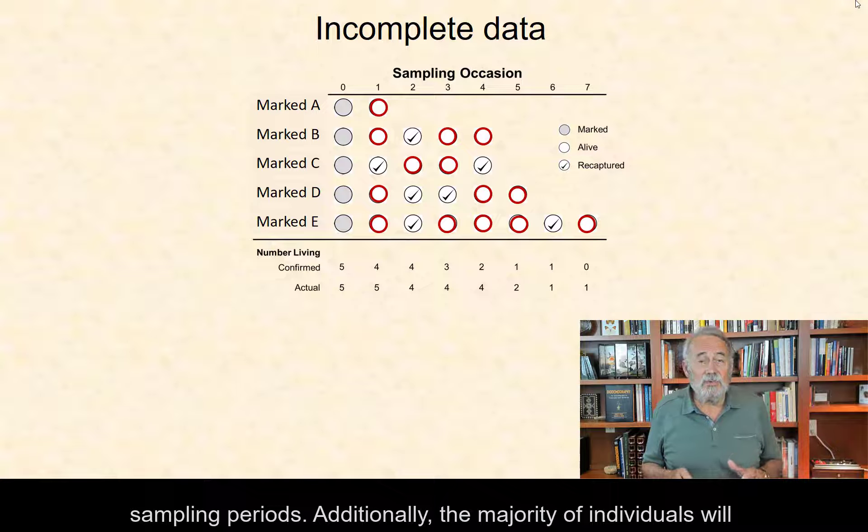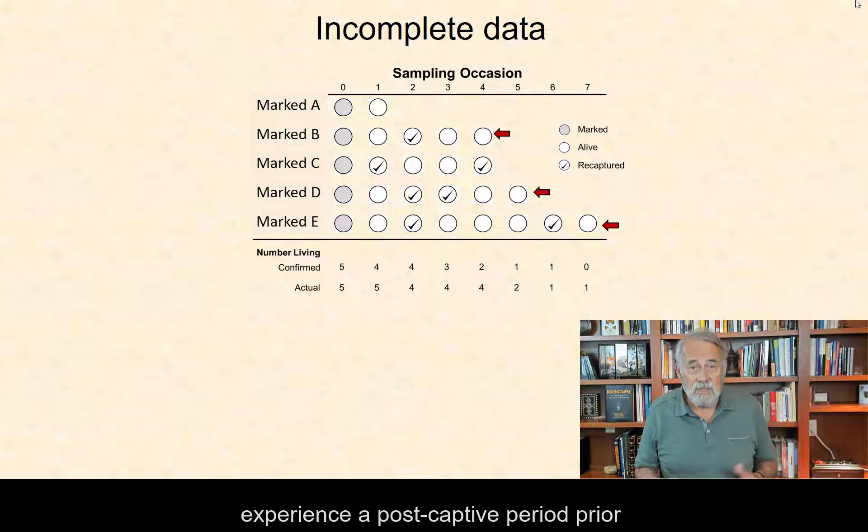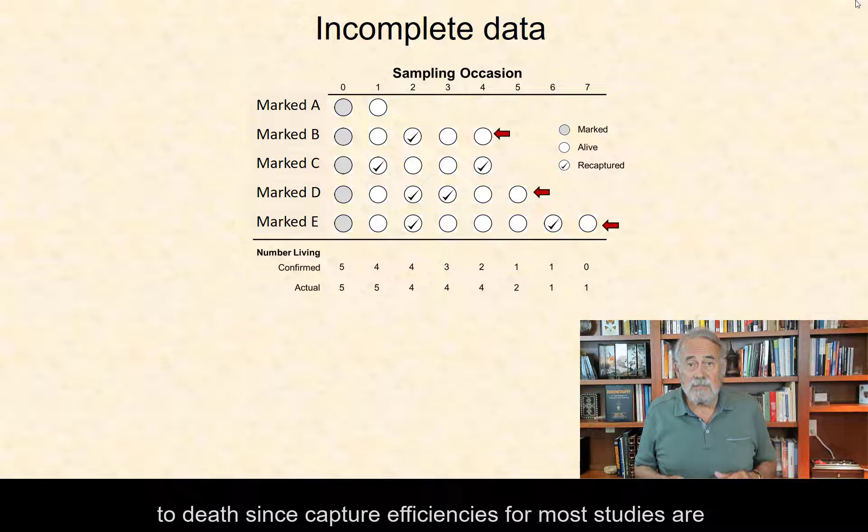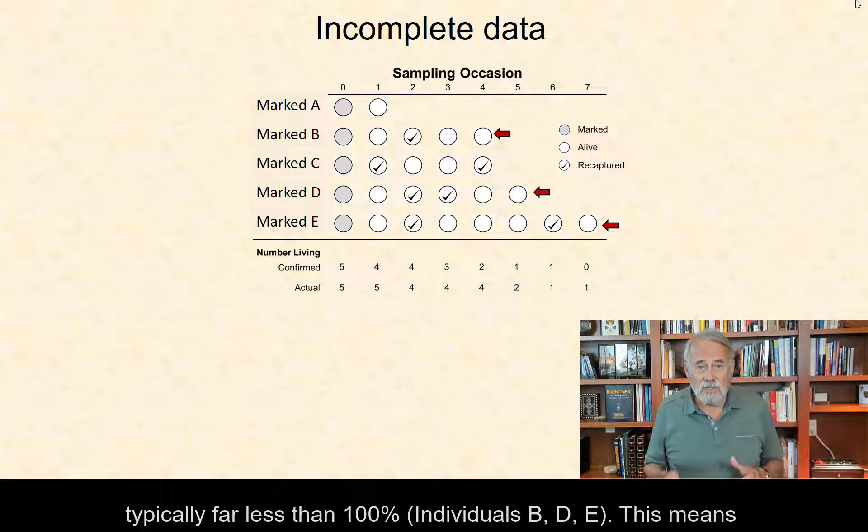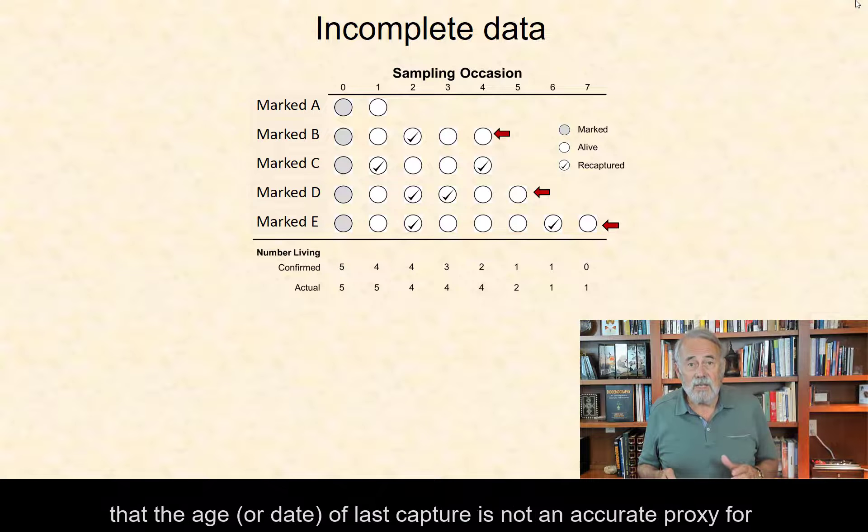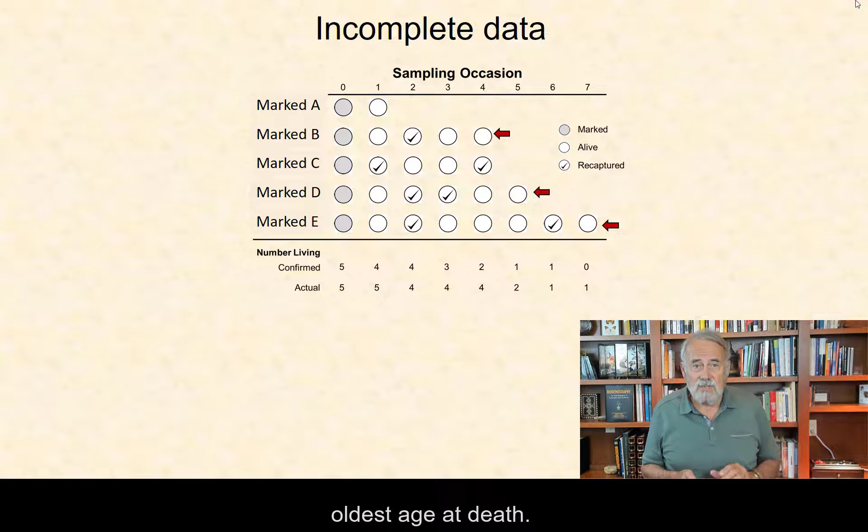Additionally, the majority of individuals will experience a post-capture period prior to death since capture efficiencies for most studies are typically far less than 100%, individuals B, D, and E. This means that age or date of last capture is not an accurate proxy for oldest age at death.